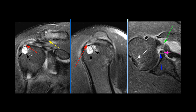The findings are consistent with a rim-rent tear along with Bankart lesion and torn subscapularis in concert with Hill-Sachs lesion.